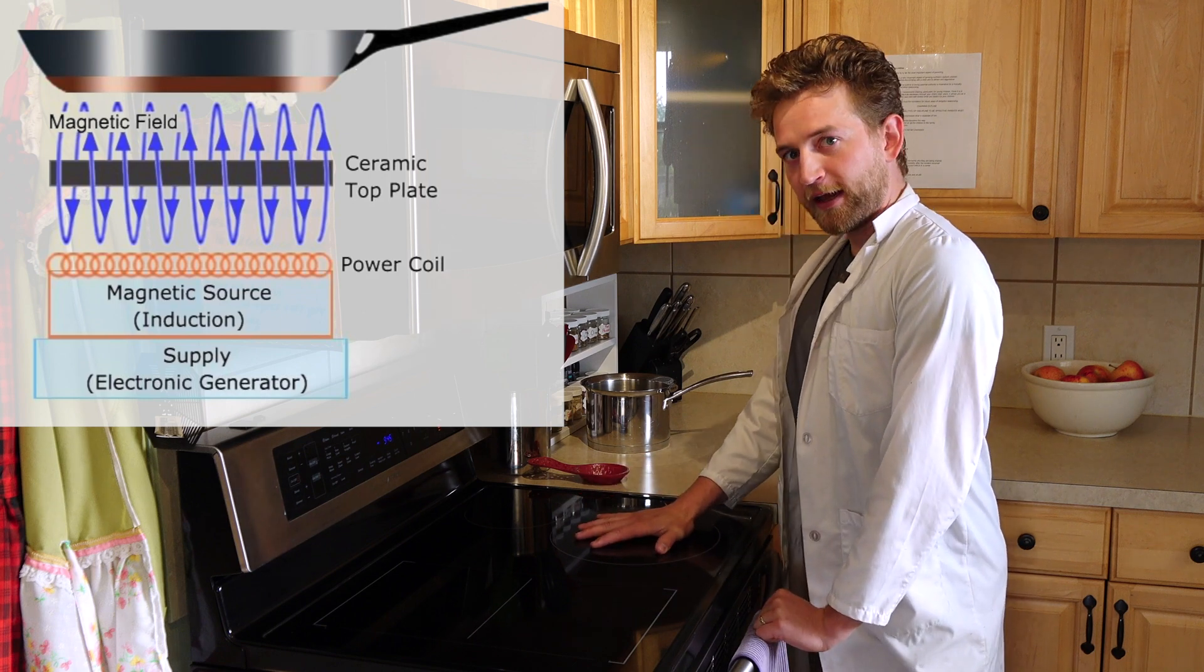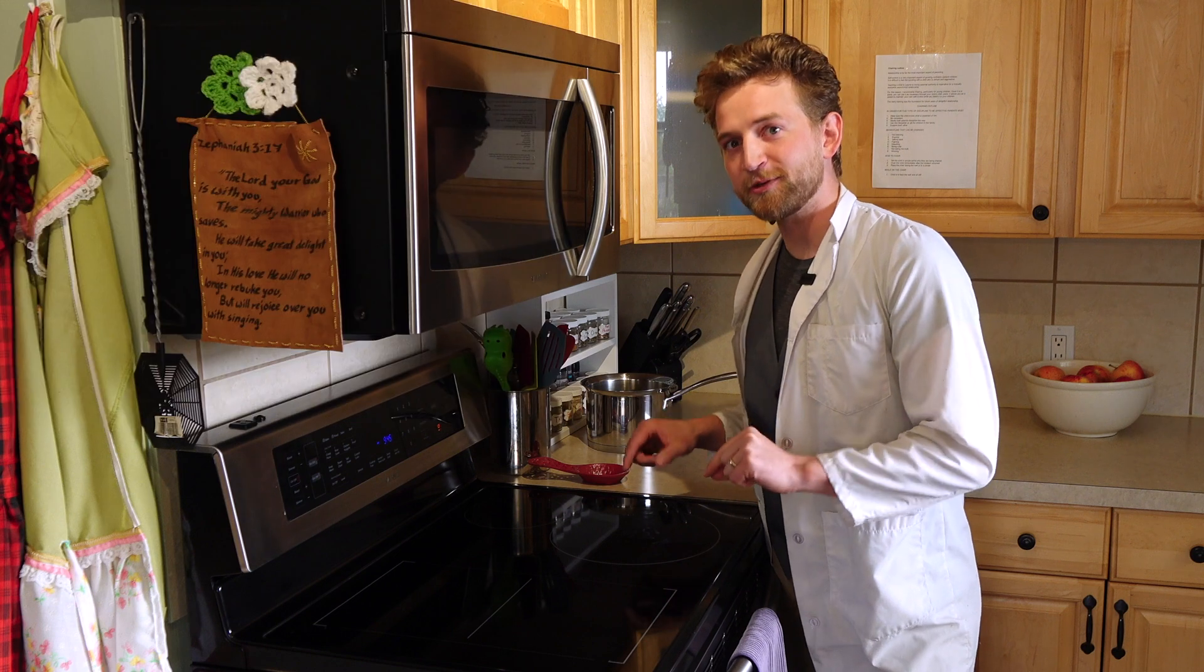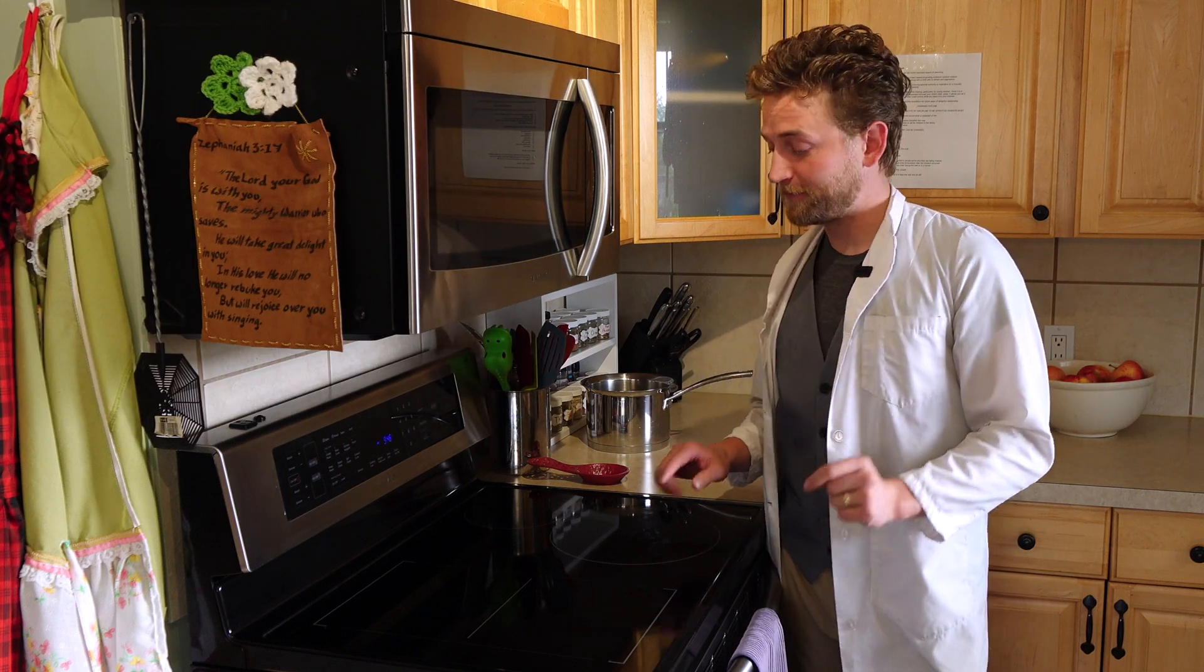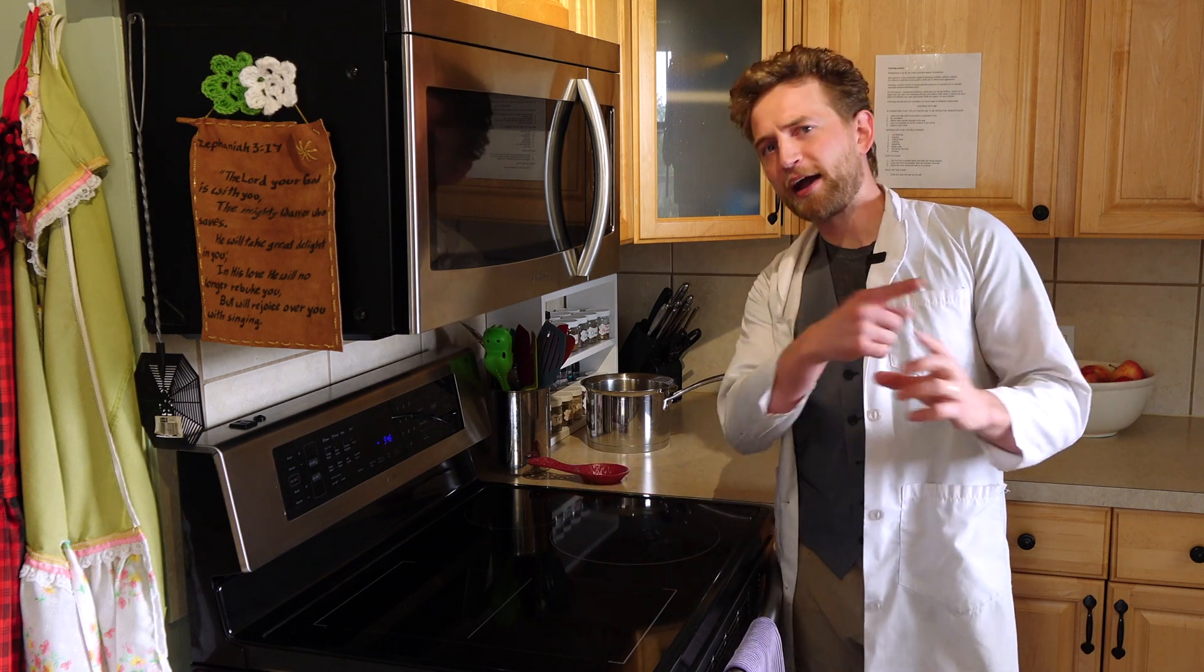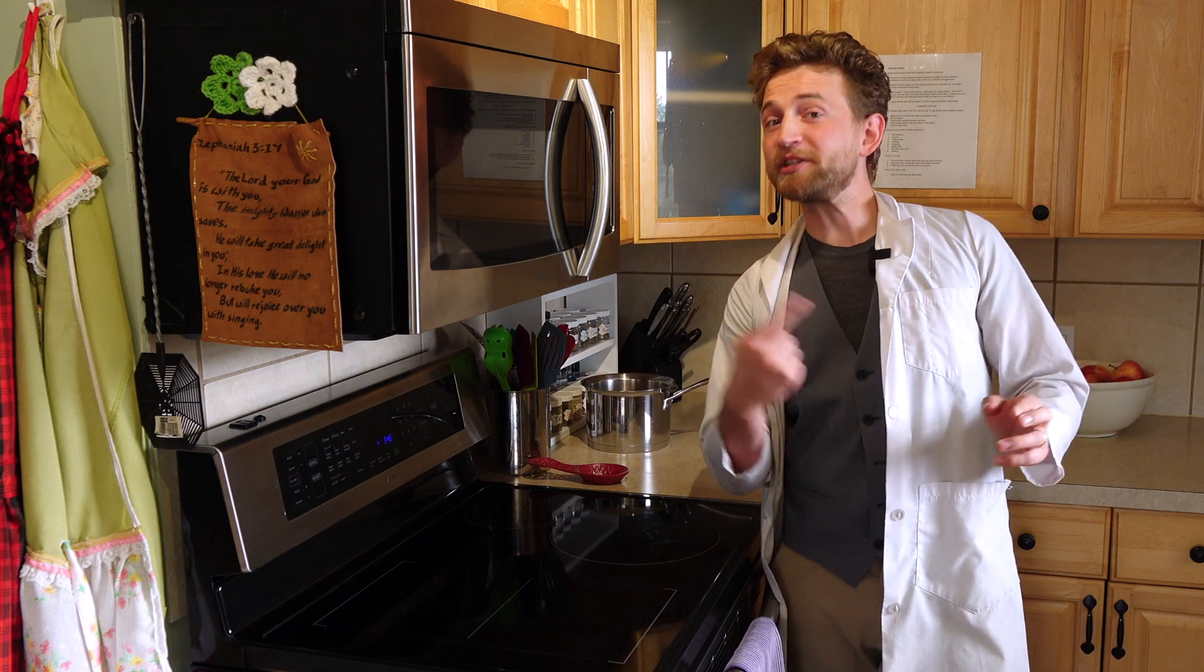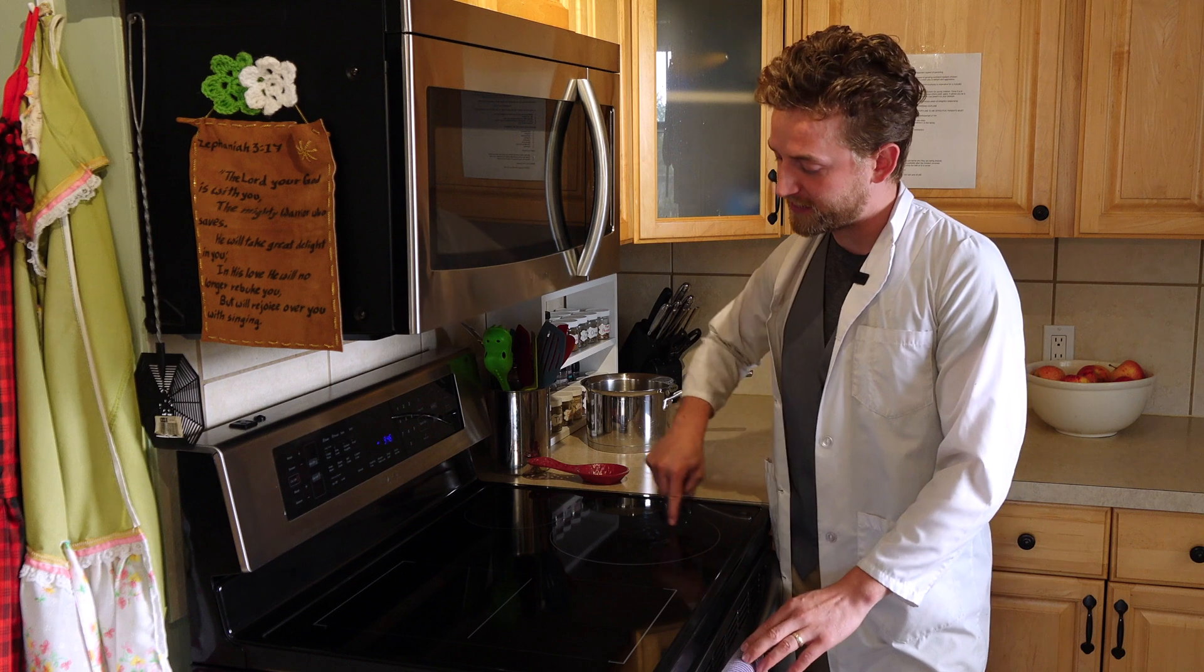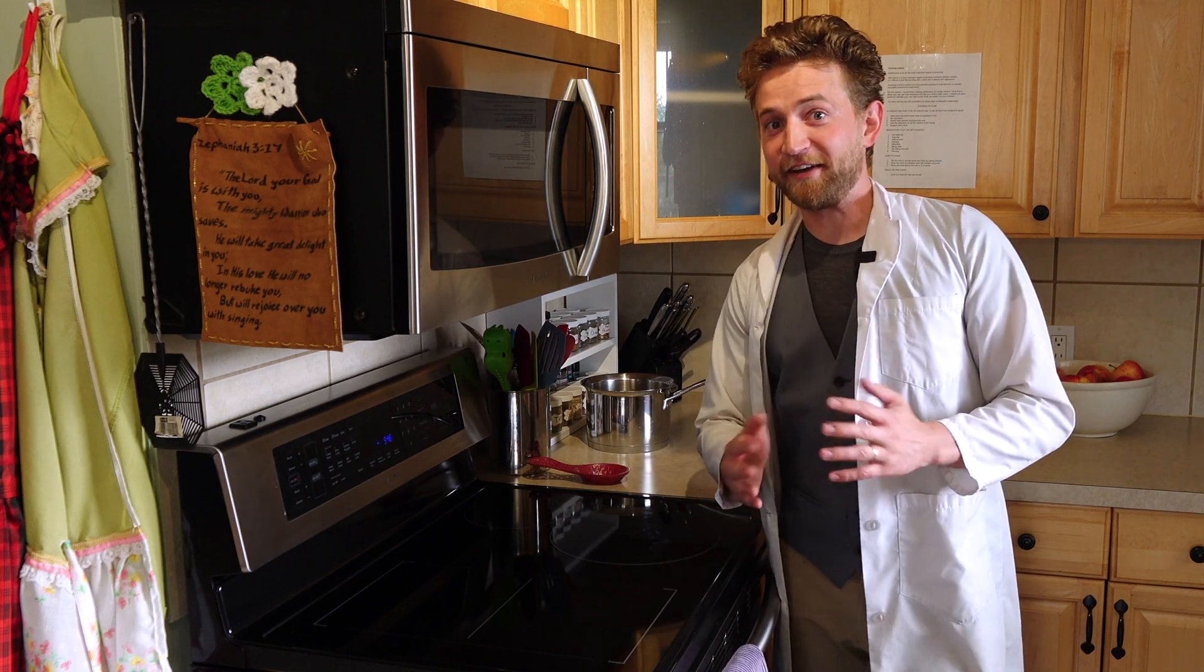Now, that by itself would not work. However, this is using an alternating current. Remember AC power. Now in normal AC power running through your house, the electricity is passing back and forth about 40 to 50 times per second. This stovetop bumps that up to between 500 and 1000 times, switching back and forth every second. So right now, the electricity is traveling this way, and then this way, a thousand times a second, very, very quickly.